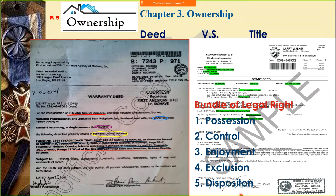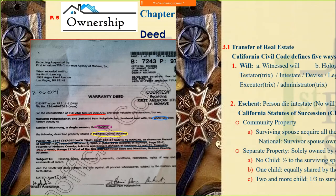Exclusion and disposition: disposition covers pretty much everything — you can buy, you can sell, you can will the property, you can get a mortgage, you can rent it out, etc. That's everything about disposition. That's the deed versus the title.